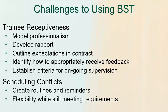You might not know that receptiveness to feedback is a problem for an individual until you get started, but then you can specify it and say, 'Here's an area we need to work on; here's what I'm looking for.' You might need to establish criteria for ongoing supervision — maybe the supervision styles aren't a good fit and you can't meet their needs. Try a different approach, and if that doesn't work, connect them with other supervisors who could help.